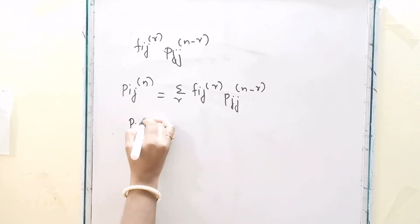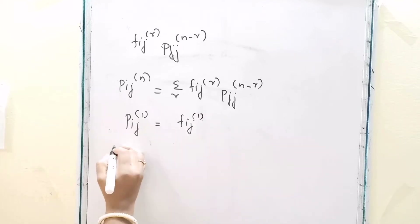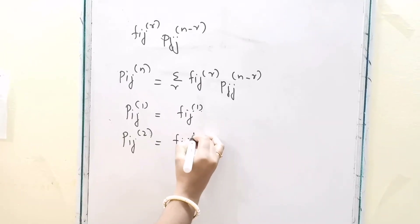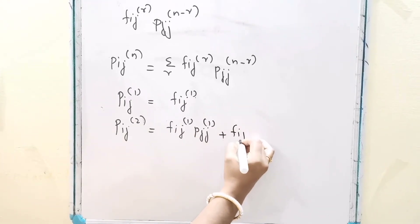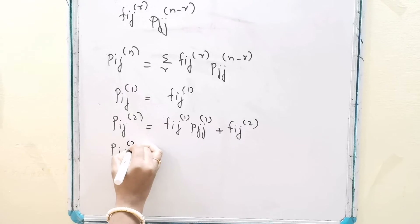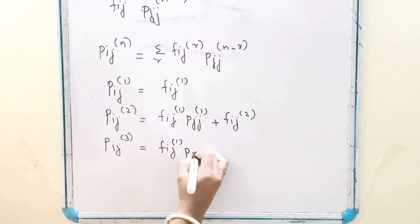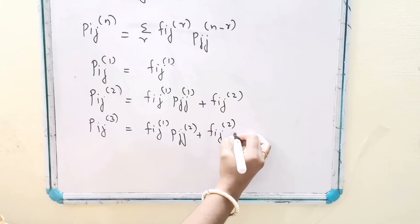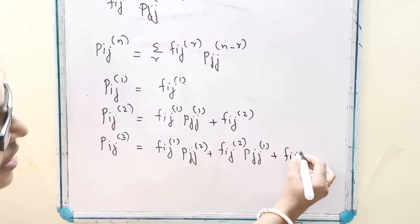Therefore, P_IJ1 equals F_IJ1. P_IJ2 equals F_IJ1 times P_JJ1 plus F_IJ2. And P_IJ3 equals F_IJ1 times P_JJ2 plus F_IJ2 times P_JJ1 plus F_IJ3.